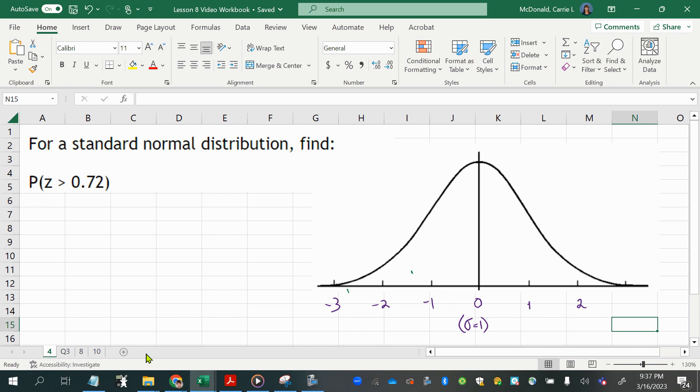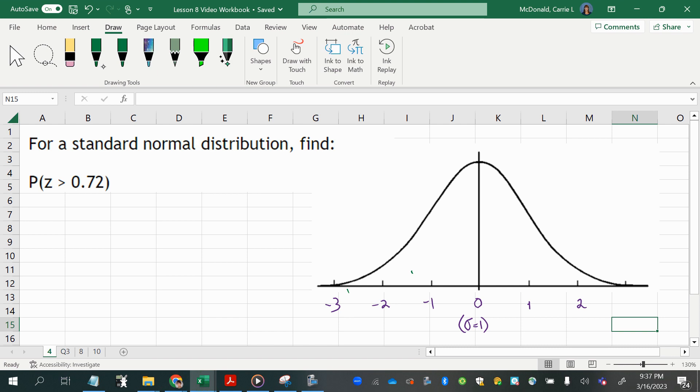And we can go ahead and sketch our boundary onto our curve here. So 0.72, right about here. And I'm trying to draw a straight line. It's a little difficult for me because I'm on a very slippery surface here, writing on a computer screen, but that's pretty good. It doesn't have to be perfect. It's just to give you a visual. Also, because it says greater than, we want to shade to the right all the z-scores that are greater than this value.